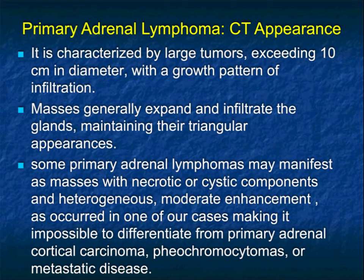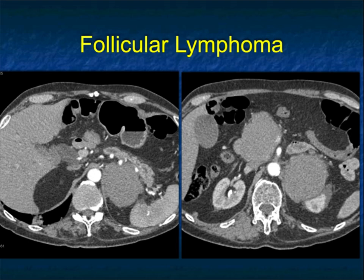Lymphoma is a really interesting tumor to involve the adrenal gland. It's typically characterized by large tumors, often 10 centimeters or greater in size. It tends to infiltrate, displacing vessels rather than invading things like primary adrenal adenocarcinoma. The masses generally expand and infiltrate the glands, often maintaining their triangular appearance. Some primary adrenal lymphomas can manifest as necrotic tumors, but most are fairly homogeneous. They're often bilateral, which makes it a little easier at times, but there's a range of appearances.